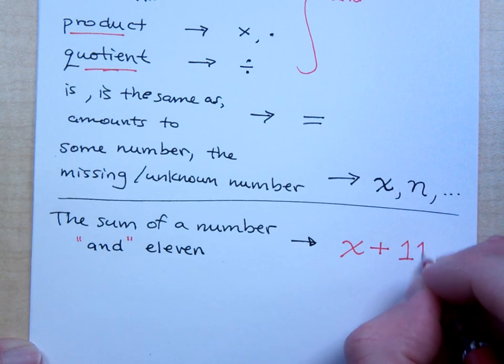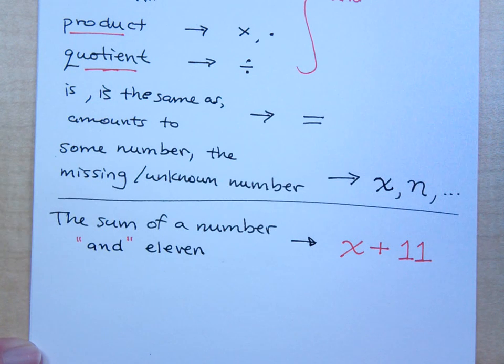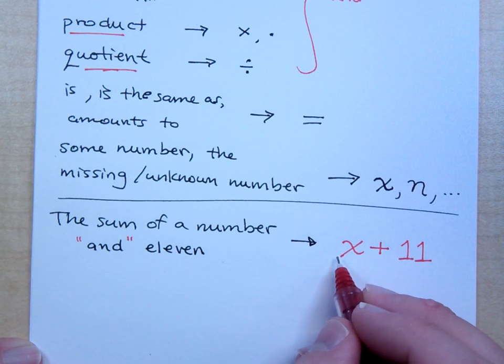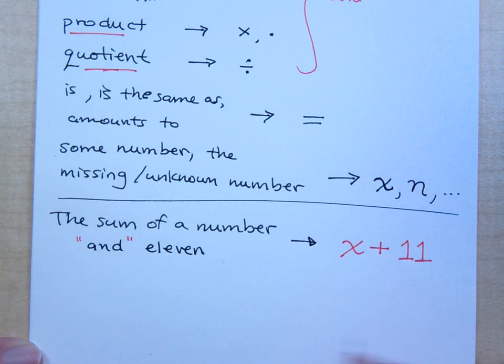What comes after the word and? And so you write eleven just like this. So that's the sum. That's the sum of what two pieces? A number and eleven. That's how you write that.